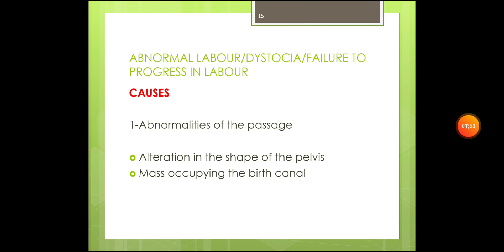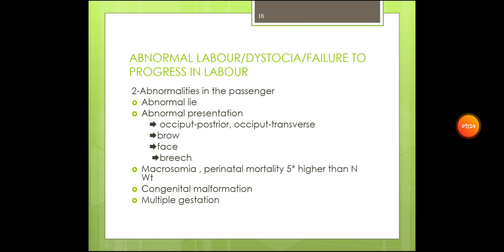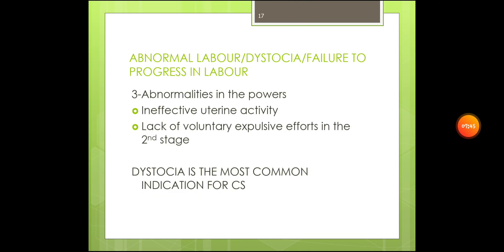What is the cause of abnormal labor, or dystocia — failure to progress in labor? The causes can be abnormality of the passages, such as alteration in the shape of the pelvis or a mass occupying the birth canal. There may be abnormalities in the passenger due to abnormal lie or abnormal presentation such as occipital posterior, occipital transverse, brow presentation, face presentation, or breech presentation. Fetal macrosomia increases perinatal mortality five times higher than with a normal weight fetus. Other causes include congenital malformations and multiple gestation. Abnormalities in the powers include ineffective uterine activity or lack of voluntary expulsive efforts in the second stage. Dystocia is the most common indication for cesarean section.